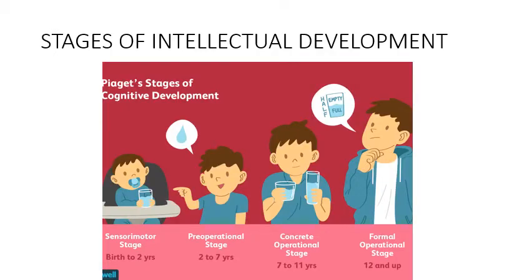We can see the different stages in a picture. In the sensorimotor stage, the child is just learning to hold a glass and sucking on a pacifier. In the pre-operational stage, the child expresses likes and dislikes for certain drinks. In the concrete operational stage, the child can think about whether a glass contains the same volume of water. And in the formal operational stage, the child thinks about abstract concepts like whether a glass is half empty or half full.